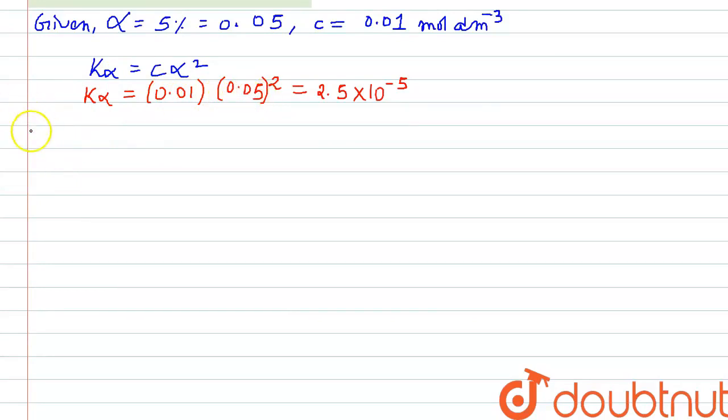For 0.05 mole per decimeter cubed solution, our K_α = c·α² is going to be K_α has the value 2.5 × 10⁻⁵ = 0.05 × α². By solving this, we will find out that our alpha value...